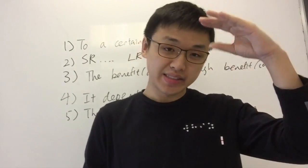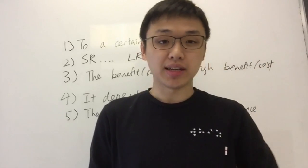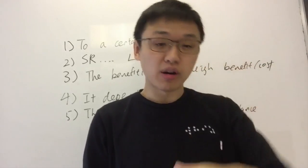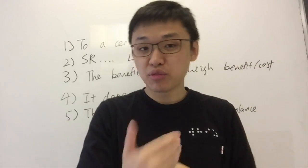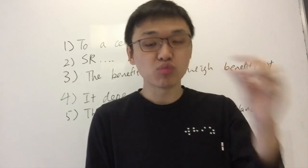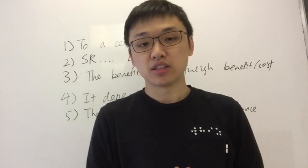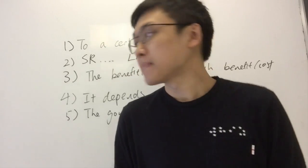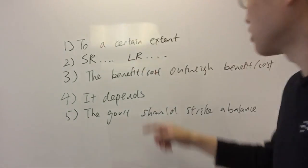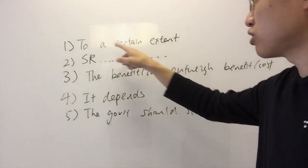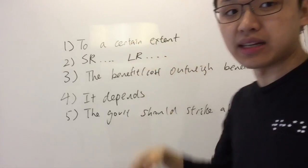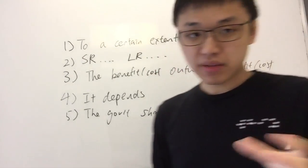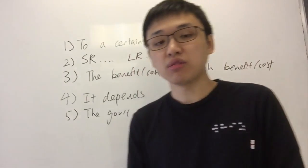There are four sentence structures you can use in your conclusion. You can use all of them, a few of them, or only one of them. The first way you can conclude is by saying 'to a certain extent.' Let me give you an example. For microeconomics, I taught you that you can talk about indirect tax for cigarettes, so let's use that as an example.